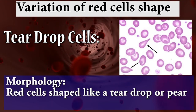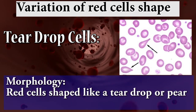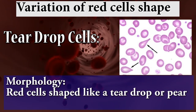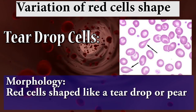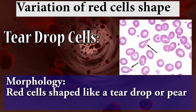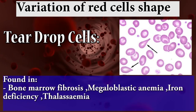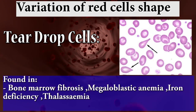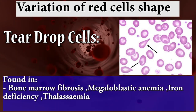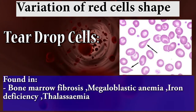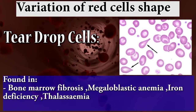The fifth shape variation is teardrop cells. The morphology shows red cells shaped like a teardrop or pear. Found in myelofibrosis, bone marrow fibrosis, megaloblastic anemia, iron deficiency, and thalassemia.